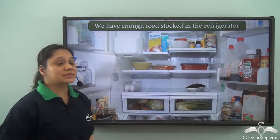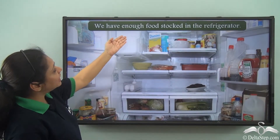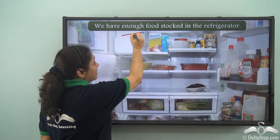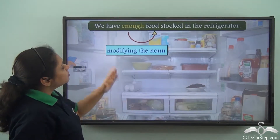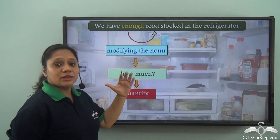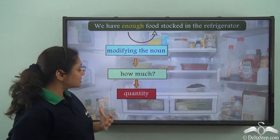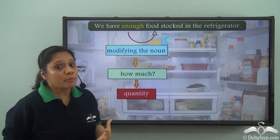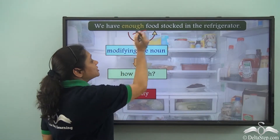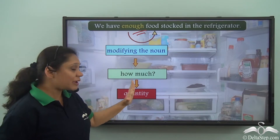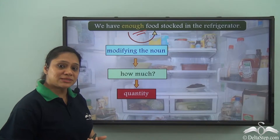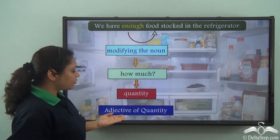Now let us read this sentence: We have enough food stocked in the refrigerator. Now in this sentence, 'enough' is modifying the noun 'food' and it is answering the question 'how much?' So it is actually referring to a quantity. How much food? Enough food. So this word 'enough,' which is modifying the noun 'food' and referring to a quantity, is an adjective. What kind of adjective is it? It is an adjective of quantity.